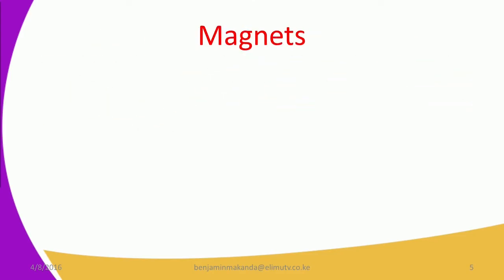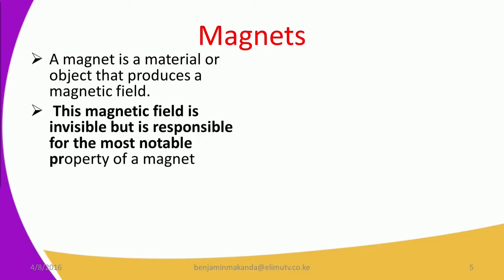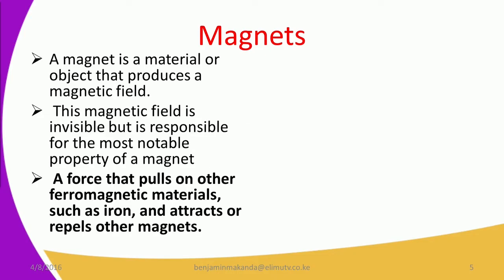From the video we are now able to discuss what magnets are. We can define a magnet as a material or object that produces a magnetic field. This magnetic field is invisible but is responsible for the most notable property of a magnet: a force that pulls on other ferromagnetic materials such as iron and attracts or repels other magnets. This force is invisible, meaning we are not able to see it, but we can feel its effect.